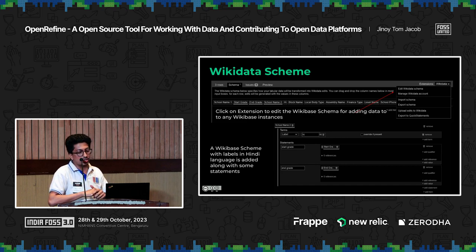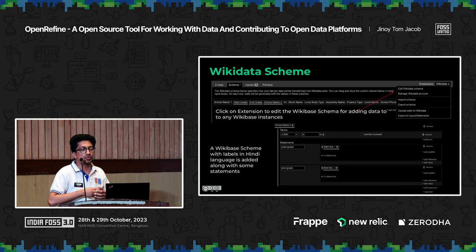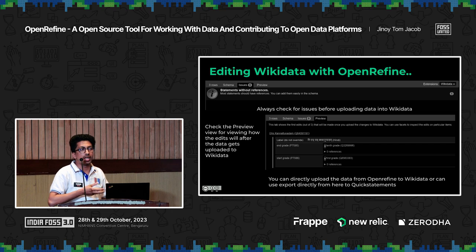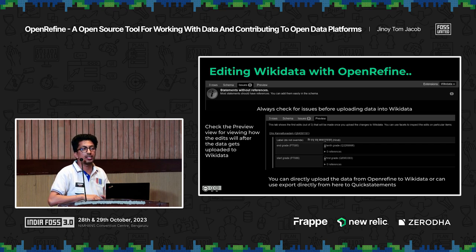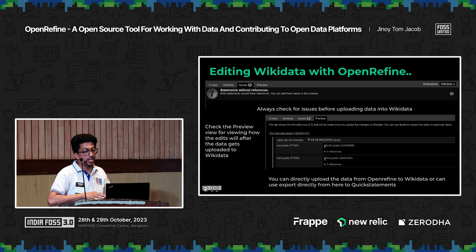This interface is shown in a screenshot for adding information in Hindi. If you are translating using this tool, or connecting information from a spreadsheet that has Hindi labels, you can upload that to Wikidata. It will also show you any issues — for example, if you are adding information without references, or if some information is incorrect — before you upload to Wikidata or any Wikibase instance, so you can check whether the data has any errors.